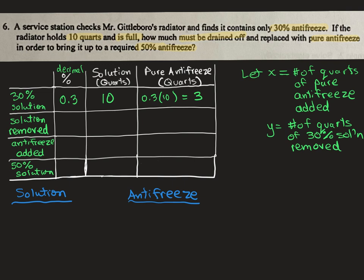Now next line or row in our table is going to represent how much solution was removed, because that was the next stage. We define that over to the side here as y. So that's what I'm going to put here for solution removed would be y. And the portion of that that was pure antifreeze, since it was 30% originally, would be 0.3 times y.